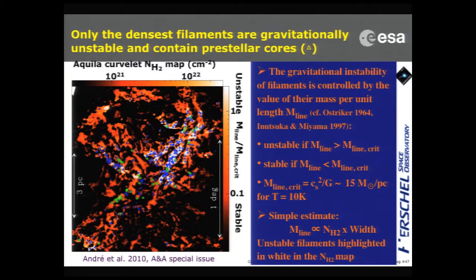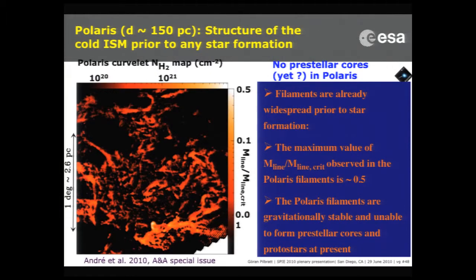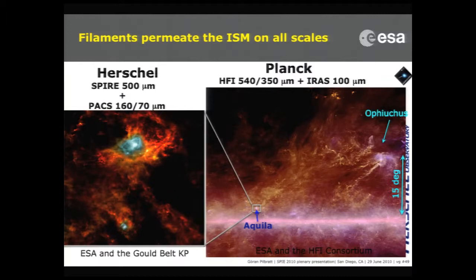They try to determine a criterion for what makes a filamentary structure unstable or not. In the Polaris system, the filamentary structures do not fulfill the instability criteria — they are stable — and therefore the authors conclude this is why these filamentary structures do not build stars. Filamentary structures are found everywhere: the Planck image on the right shows the interstellar medium close to the galactic plane with these structures at all scales, both the large scales in the Planck image and smaller scales in the Herschel image.